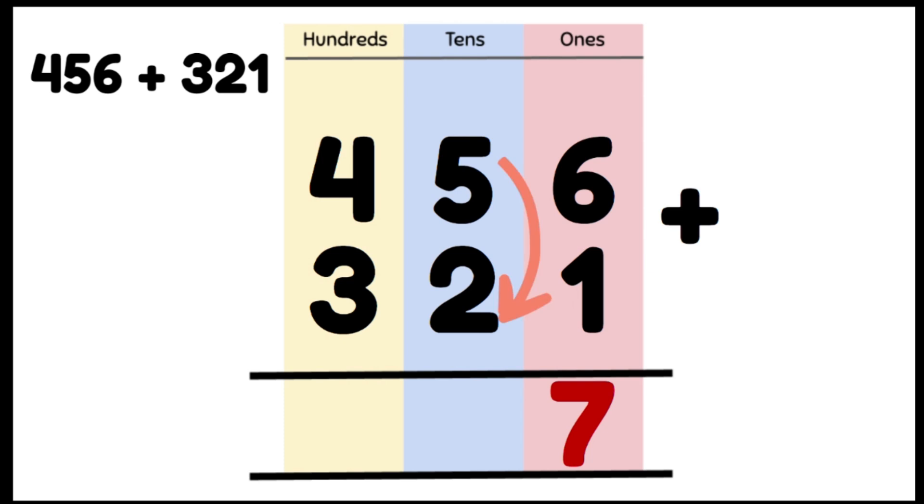Now we're adding our tens. 5 tens plus 2 tens gives us 7 tens. So we write that in our tens column. 4 hundreds plus 3 hundreds give us 700, and we write that in our hundreds column. So our answer is 777.